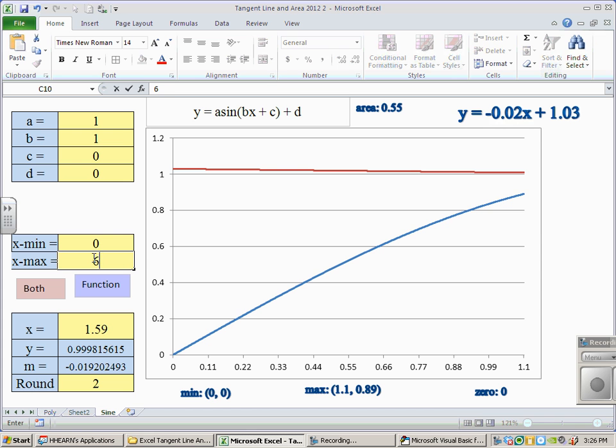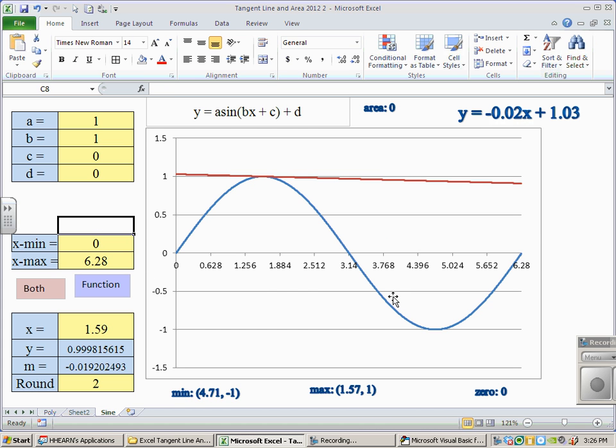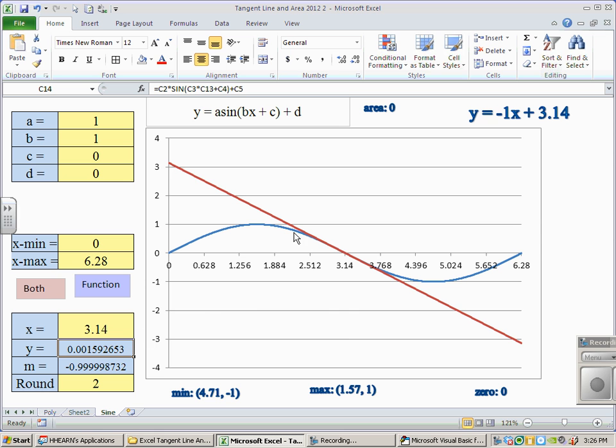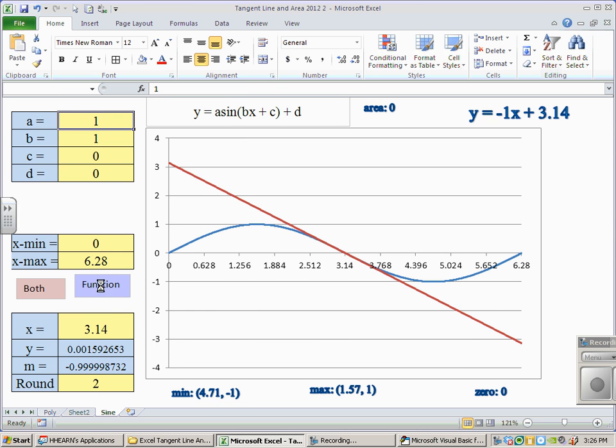And, that looks awfully good as a sine curve. Does my tangent line still work if I change this? I'm going to go to 3.14. And, there's our tangent line right there.